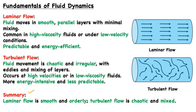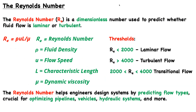So the summary is that laminar flow is smooth and orderly, and turbulent flow is chaotic and mixed. How do we know whether a fluid is going to experience laminar or turbulent flow? If we're designing something, we can't simply try every possible option — we need to be able to predict and guarantee the type of flow.